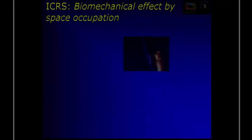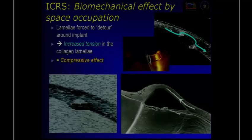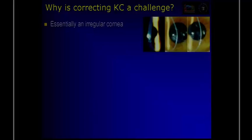In the cornea, if it is not a problem of thickness, we have a biomechanical problem. And actually, there is always a biomechanical phenomenon. So an implant occupies a space in the cornea, and the collagen lamellae are forced to bypass, to detour around the implant, and there is an increased tension in the collagen lamellae — a compression effect.